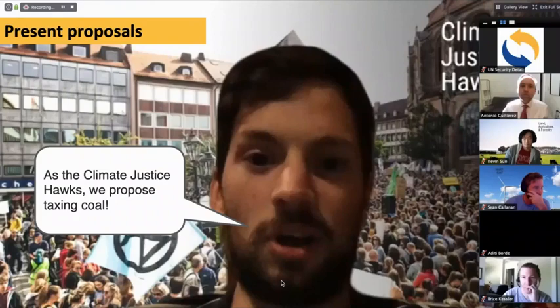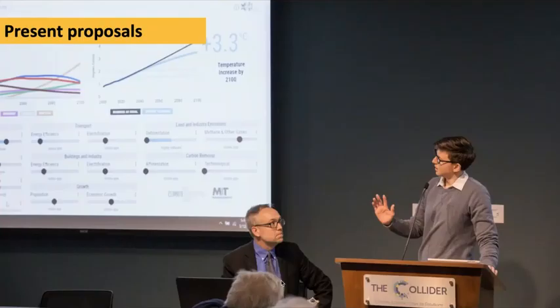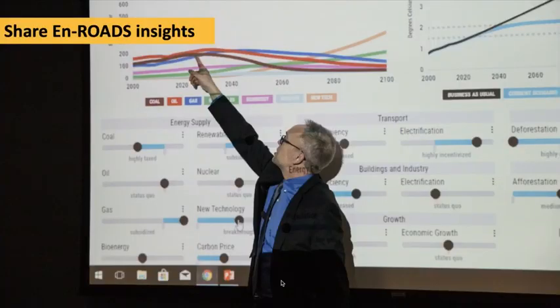After the team meeting, each group presents their proposal. For example, someone playing a climate justice representative might say, 'We propose taxing coal,' and highlight equity considerations, such as, 'We propose taxing coal because it will both lower greenhouse gas emissions and help air quality across the world.' Then the facilitator — either you or a co-facilitator — inputs those proposals into En-ROADS, shares some of the insights, and helps illuminate what's going on in the model after that proposal.